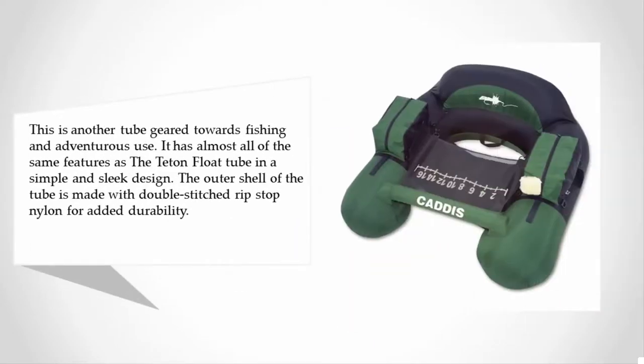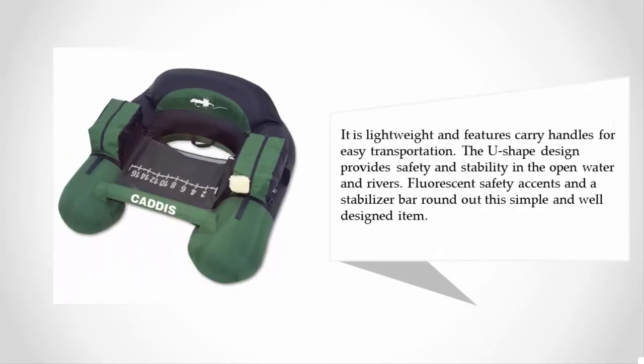the Titan Float Tube in a simple and sleek design. The outer shell of the tube is made with double-stitched ripstop nylon for added durability. It is lightweight and features carry handles for easy transportation. The U-shaped design provides safety and stability in open water and rivers. Fluorescent safety accents and a stabilizer bar round out this simple and well-designed item.